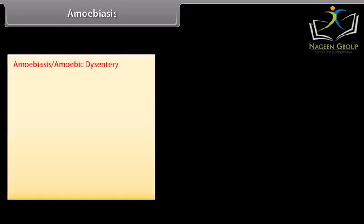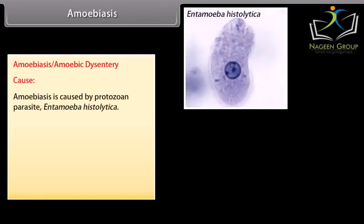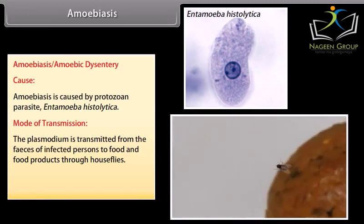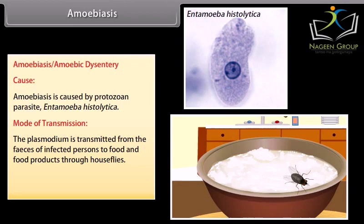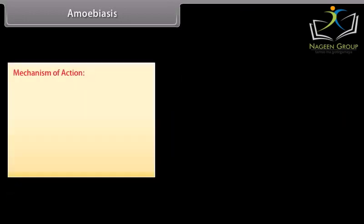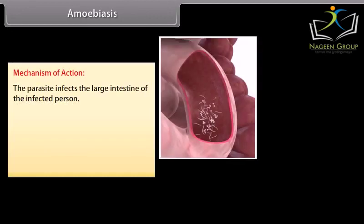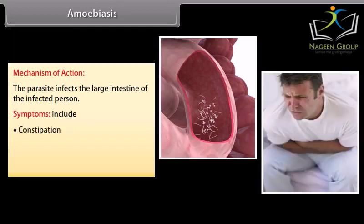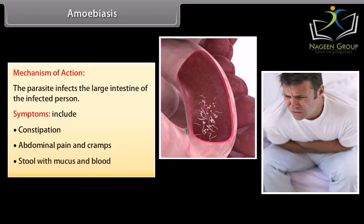Amoebiasis or amoebic dysentery is caused by protozoan parasite Entamoeba histolytica. Mode of transmission: the parasite is transmitted from the feces of infected persons to food and food products through houseflies. Consuming contaminated food and water is the main source of infection. Mechanism of action: the parasite infects the large intestine of the infected person. Symptoms include constipation, abdominal pain and cramps, and stool with mucus and blood.